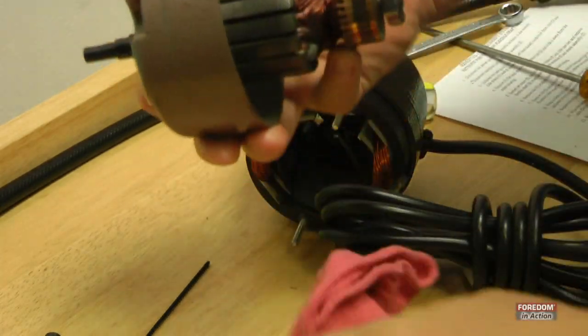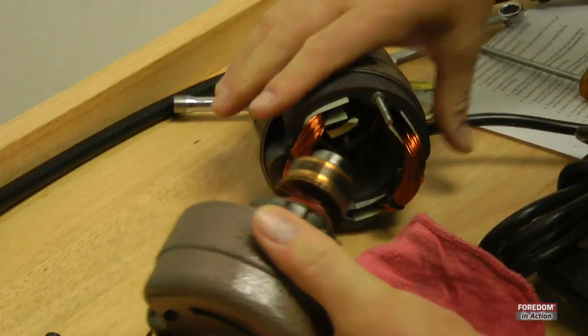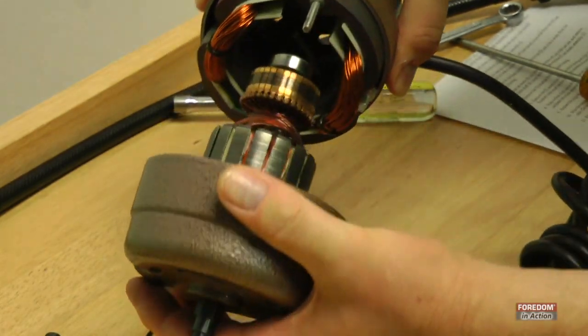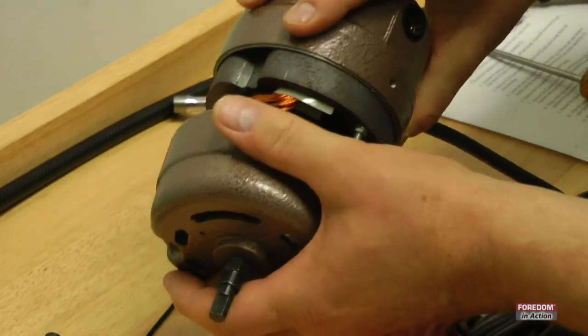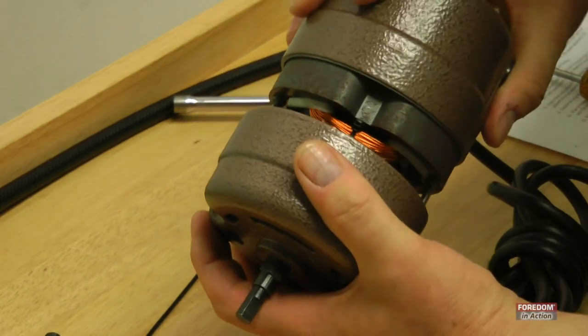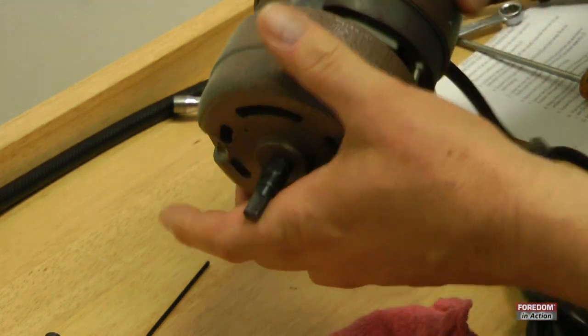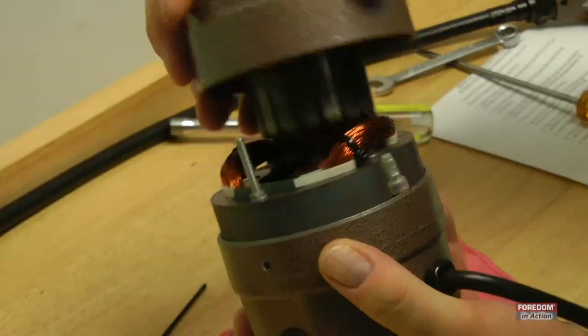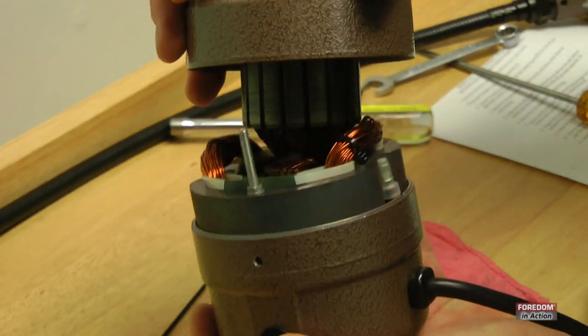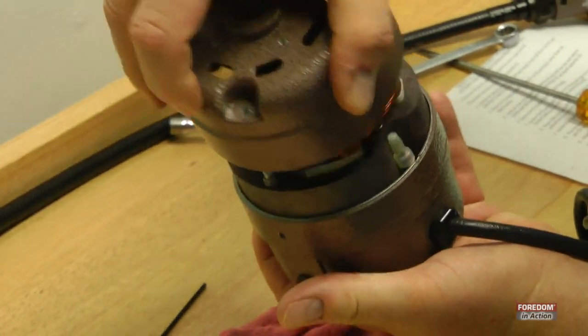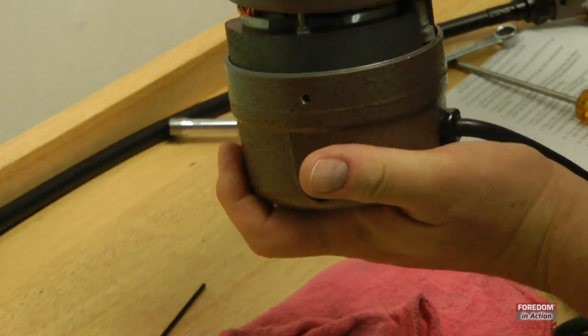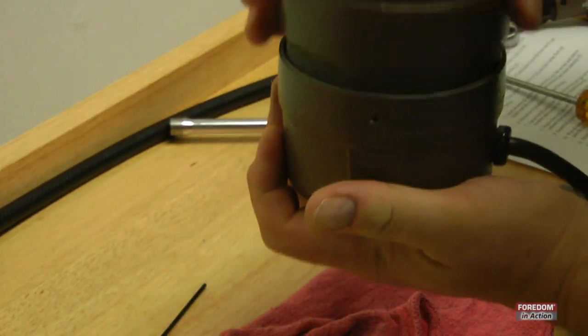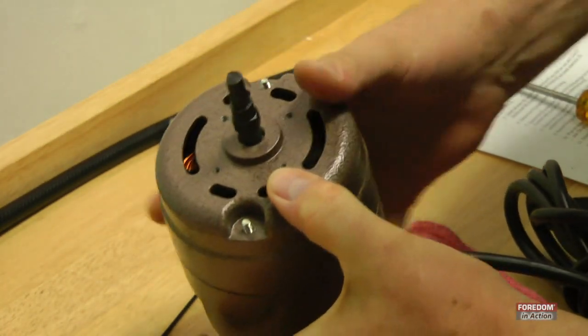Now you replace the motor back in. Be careful not to pinch anything. Line up the screws with the brush holders. There's your screw. There's your brush holder. You line up the threaded area with that.